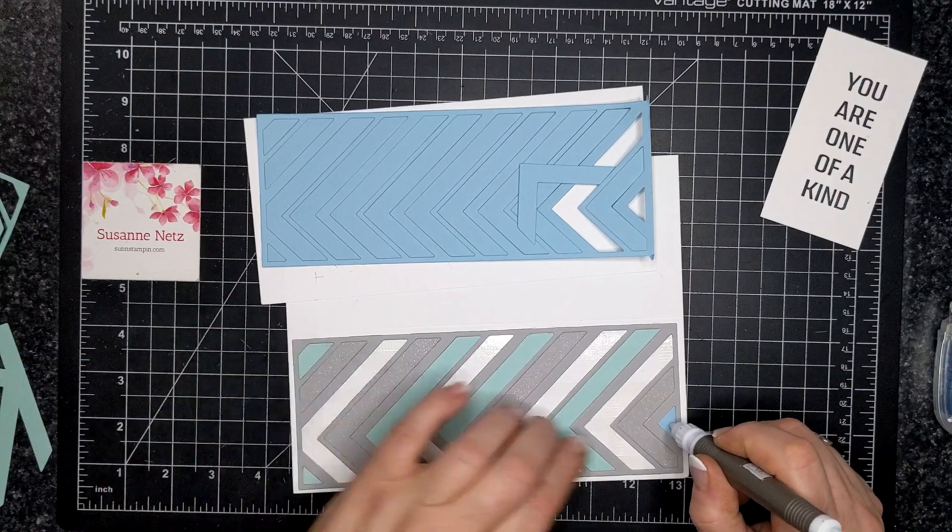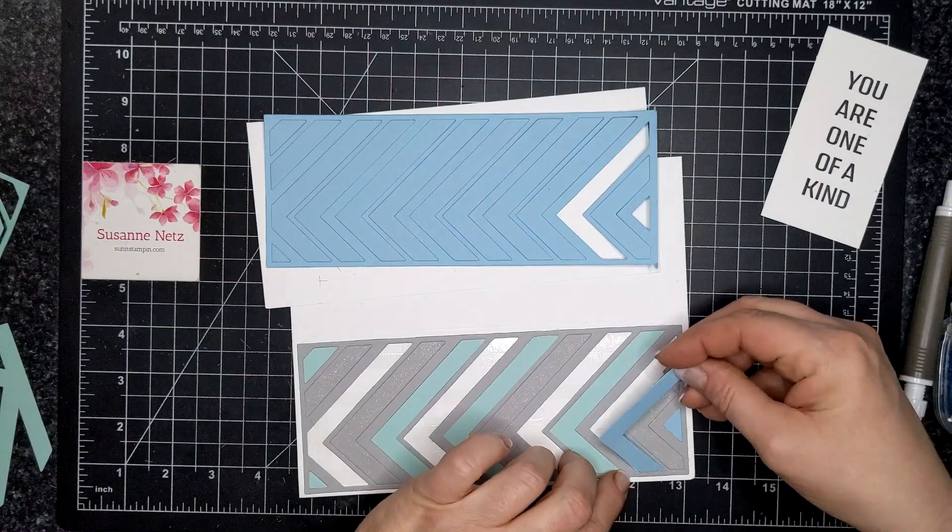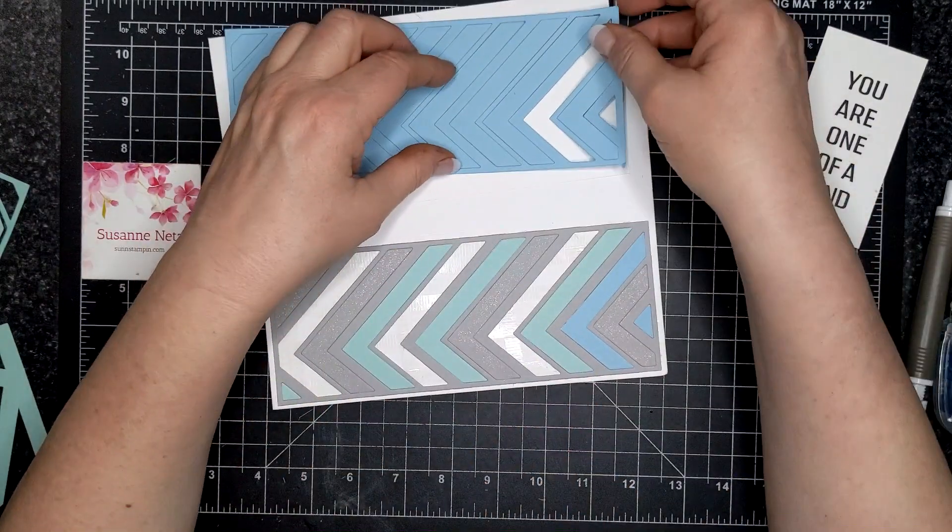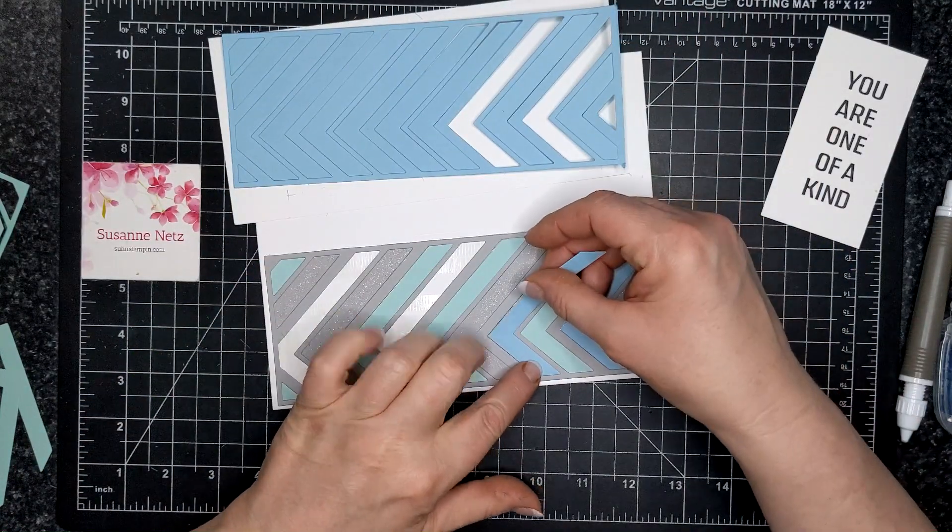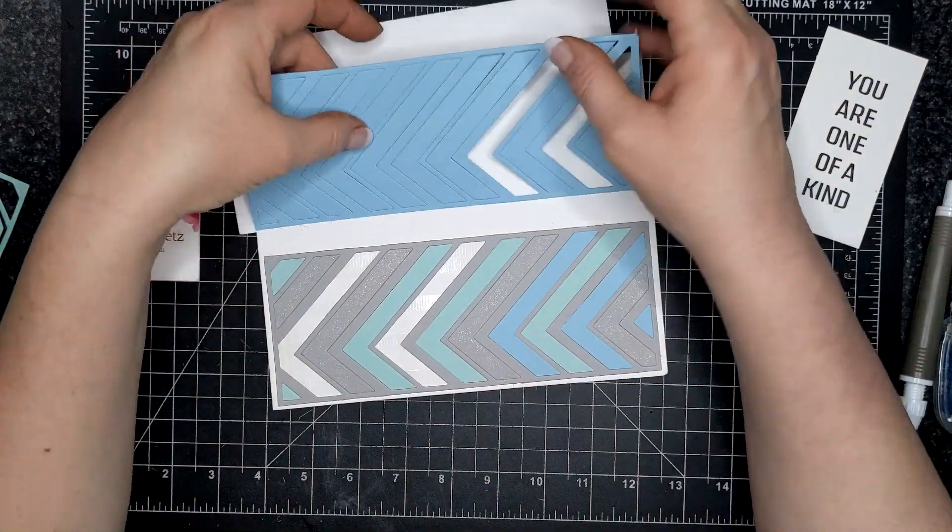So I'm just finishing up putting the negative pieces into the sticky inserts there. And just as a note, I only used Wink of Stella on that smoky slate color.